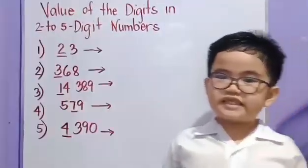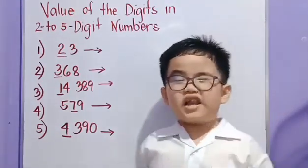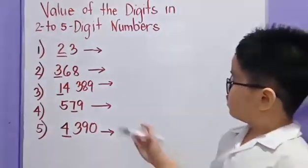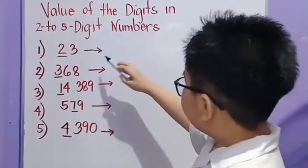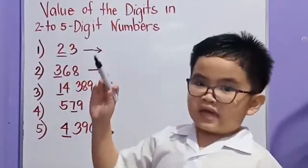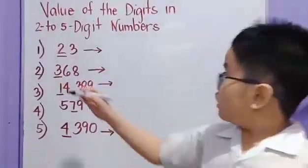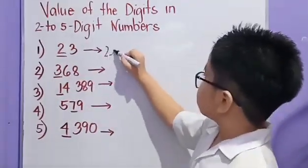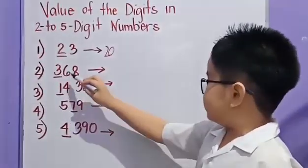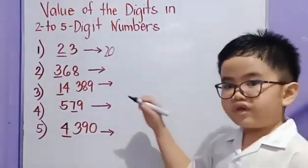Now, let's have more examples. You will know the values of the underlined digits. So, first, let's read 23. Again, 23. So, the value of 2 is 20. Let us read 368. So, the value of 3 is 300.